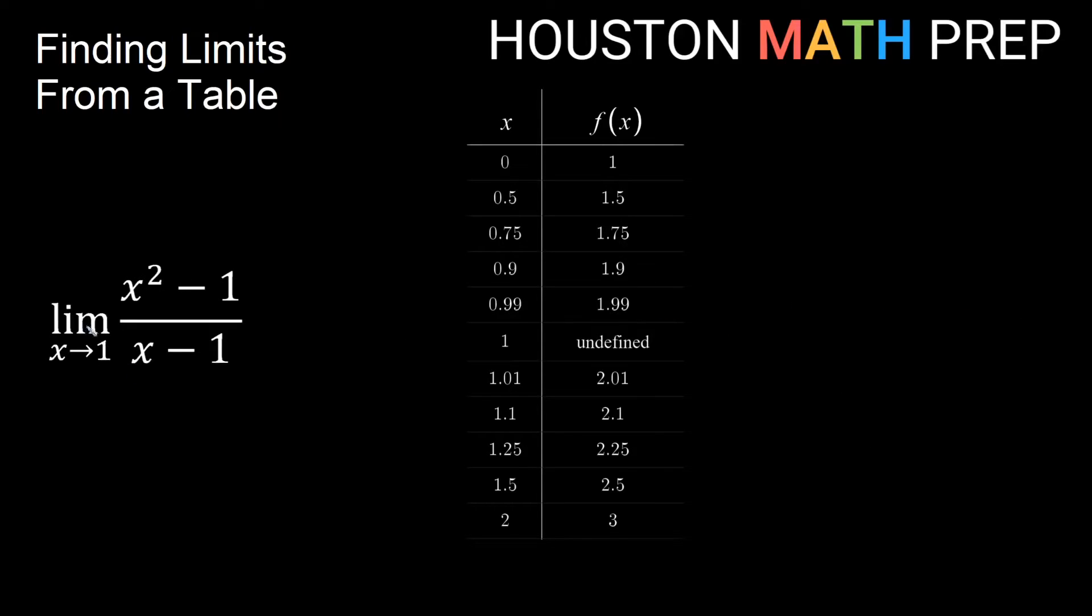Our next example, the limit as x approaches 1 of x squared minus 1 over x minus 1. You'll notice here if we plug in 1 in the bottom here, we'd get 1 minus 1 and we'd get 0 and divide by 0 is undefined. So again, we have undefined. But the question is, do we approach the same y value, not whether we're defined at 1?